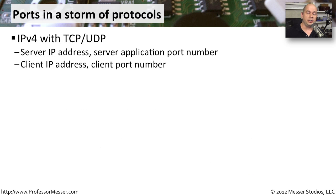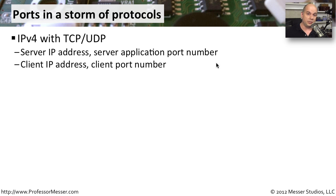When you start looking at communications between two devices, you see IP addresses and port numbers being used for TCP and UDP. For example, with IPv4, to send information from one side to the other, you need the server's IP address and a server application port number, as well as a client IP address and a client port number. These four separate numbers are in use — the server's IP and port are paired together, and the client's IP and port are paired together — opening the line of communication so those two systems can send information between each other.